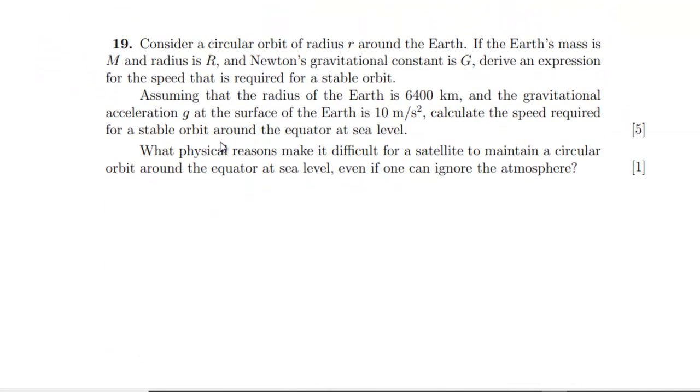Question 19. We've got to consider a circular orbit radius r around the Earth. If the Earth's mass is M radius capital R, that's our big G, deriving expression for the speed that's required for a stable orbit. So we're just doing circular motion standard stuff. So our force, which is GMm over little r squared, because that's the orbit radius, is mV squared over r. Get rid of some m's. Get rid of an r on each side. And that leaves us with that V is the square root of GM over little r.